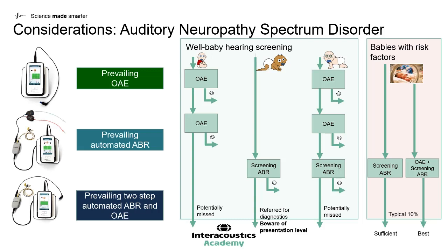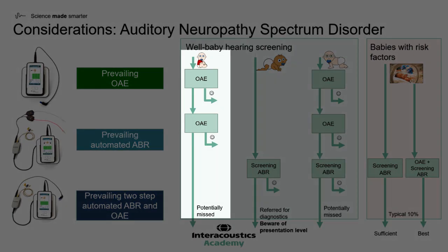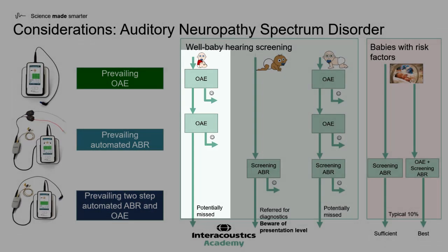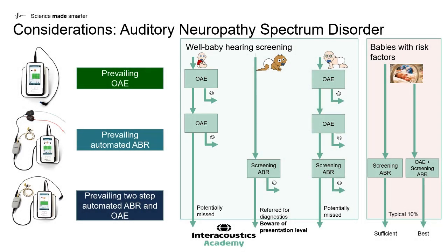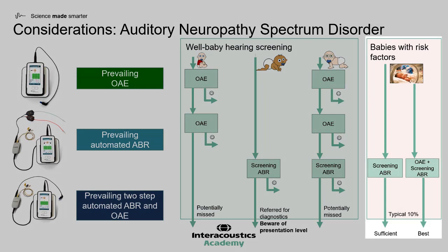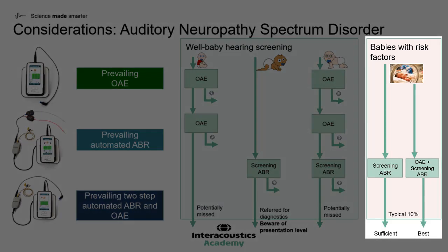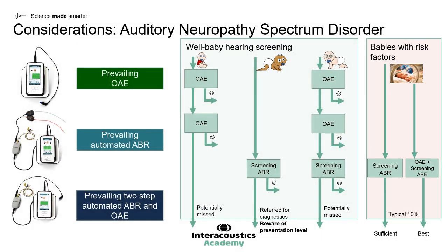Another consideration when deciding which screening method is best is to think about more complex conditions. An important condition which has been noted recently is auditory neuropathy spectrum disorder. If an OAE-only approach is used, babies with auditory neuropathy spectrum disorder can often have present otoacoustic emissions and therefore may be missed in the well-baby screening pathways. Babies with risk factors always need screening ABR, as they are at greater risk for auditory neuropathy spectrum disorder.